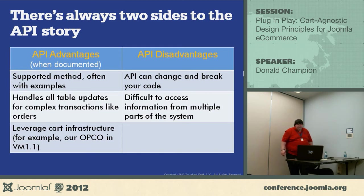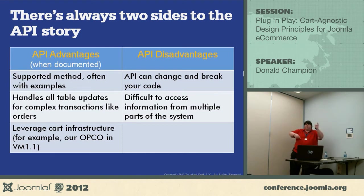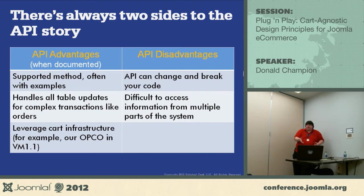As opposed to undocumented functions, which can change and break your code because they don't have to support them. They can change it because they need to add a function for another component they're building. The API advantage for complex operations: it handles all the table updates. When you're putting stuff in, it's a lot easier to use their APIs because they handle all the interactions, all the checks.